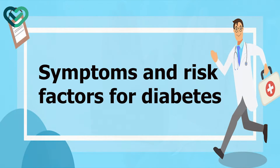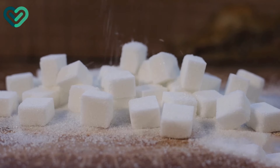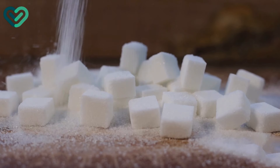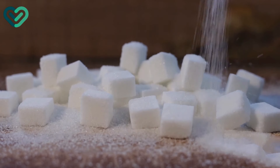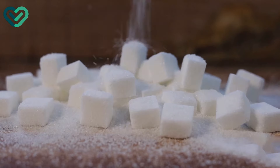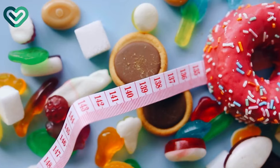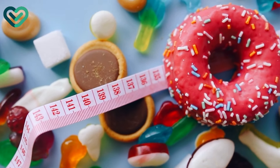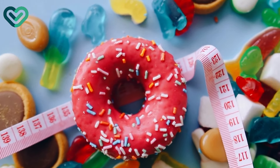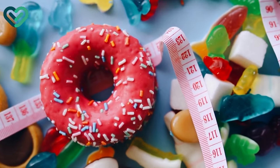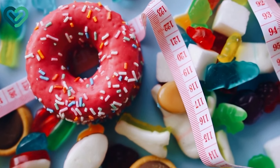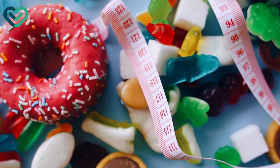Symptoms and risk factors for diabetes. Constant thirst and frequent urination are among the most common symptoms of diabetes. But why do these symptoms appear in the patient? What is the normal rate of urination for a healthy person, and what are the remaining known symptoms of the disease? All of these questions, we will find out the answers to together in this video.